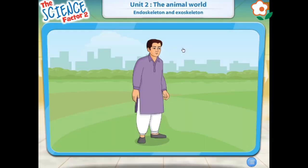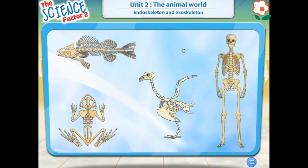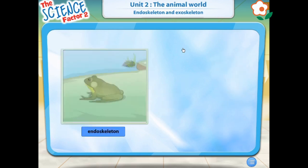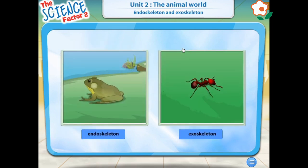All animals in this world have features that help them in different ways. We humans are also animals, but we are smarter than other animals on Earth. Scientists have divided animals into two groups according to the type of skeleton they have. Some animals have skeletons inside their bodies, and some have them outside their bodies. To know about each, click any of the images.